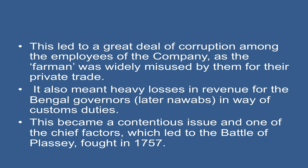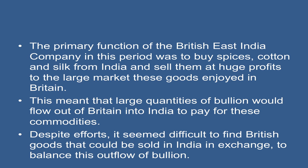This misuse also meant heavy losses in revenue for the Bengal governors, later nawabs, in the way of custom duties. This became a contentious issue and one of the chief factors which led to the Battle of Plassey, which was fought in 1757. The primary function of the East India Company in this period was to buy spices, cotton, and silk from India and sell them at huge profits in Britain. This meant that large quantities of bullion would flow out of Britain into India to pay for these commodities.